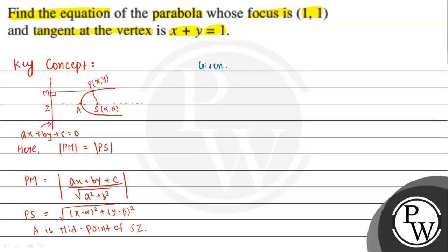Now we will solve the given problem. The focus of the parabola is (1, 1) and the tangent at the vertex has equation x plus y equal to 1. We draw the parabola with the tangent at the vertex as the given line. The axis is the horizontal axis of the parabola, and S is the focus with coordinate (1, 1).